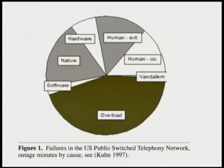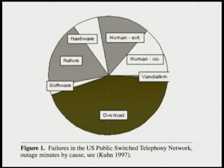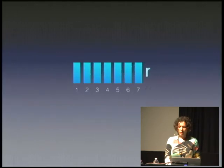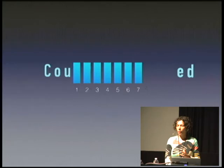Let's take a closer look at this diagram. It shows failures in the U.S. public switch telephony network outage minutes by cause. Obviously, overload is the main cause for failures. I hope this diagram is scientific proof enough for you to be aware of overload and consider preventing it before your code goes into production. One of the great tools the Jobs framework offers is counter-based regulation. What it does: it only lets up to a certain number of jobs execute simultaneously — anything else gets queued up. I use seven because there are eight CPUs in my machine.